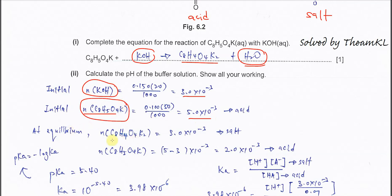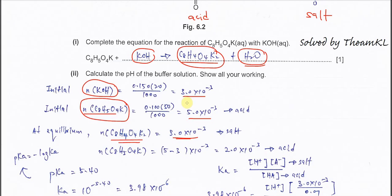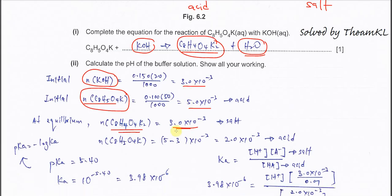KOH will react with the acid here to form the salt. At equilibrium, the salt that forms will be the same as the mole of KOH that was used. The acid will reduce because some of it reacts with the KOH. Use the initial mole minus 3 times 10 to the power of negative 3, so we'll get the mole of acid, which is 2 times 10 to the power of negative 3. Now we got the mole of acid and we got the mole of the salt.